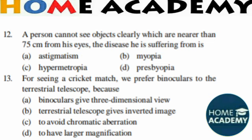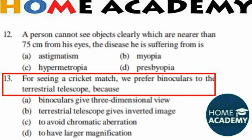Question number 13: Why do we prefer binoculars over a periscopic telescope? The correct answer is that binoculars give a three-dimensional view. That is why we prefer binoculars.